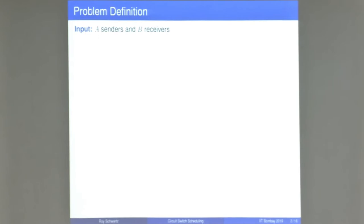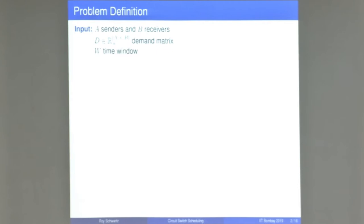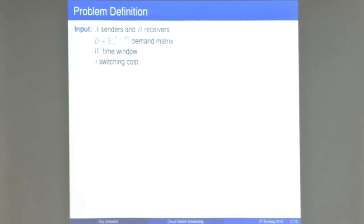We get a collection A of senders and a collection B of receivers. We also get a demand matrix: for every sender i and receiver j, d_{ij} denotes how much data needs to be sent from sender i to receiver j. We get the size of the time window w, and also the fixed switching cost delta — every time we change the matching there's an interval of delta time that nothing can be sent.